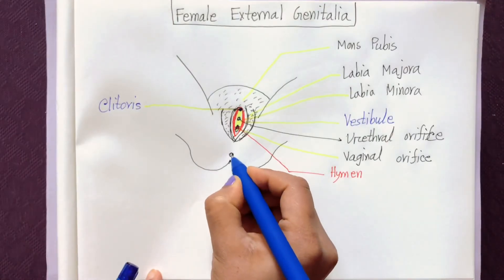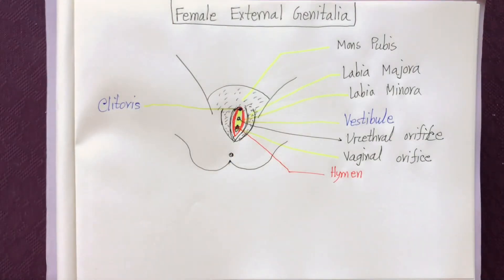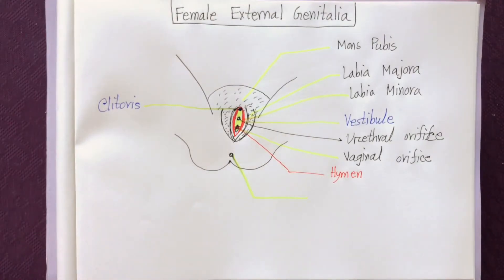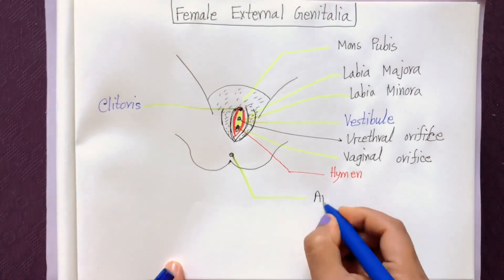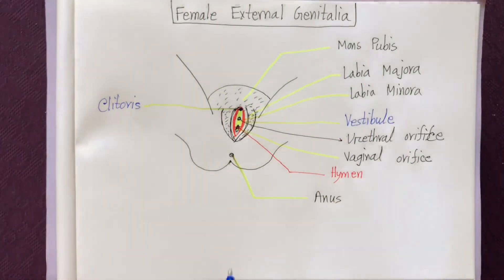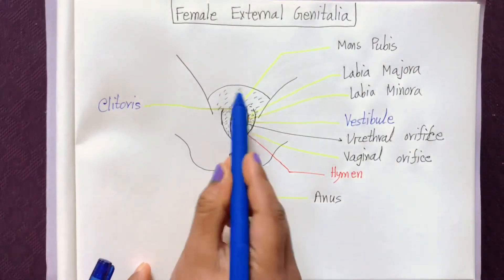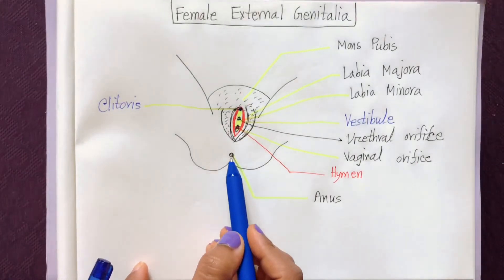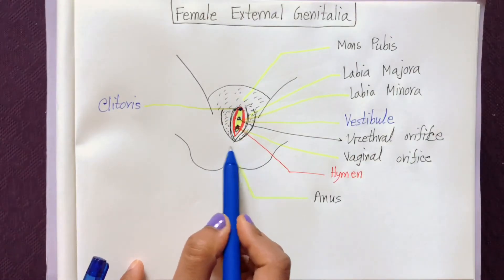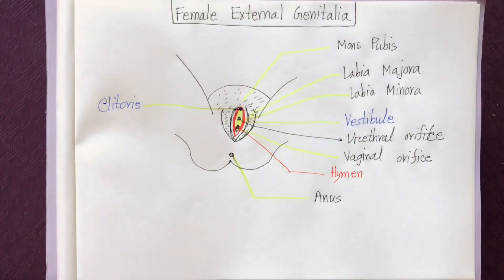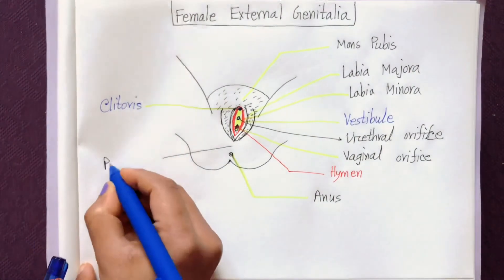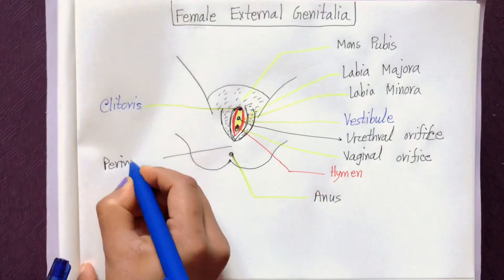Another opening present here is called the anus, but the anus is not part of the female external genitalia. The space between the female external genitalia and the anus is called the perineum.